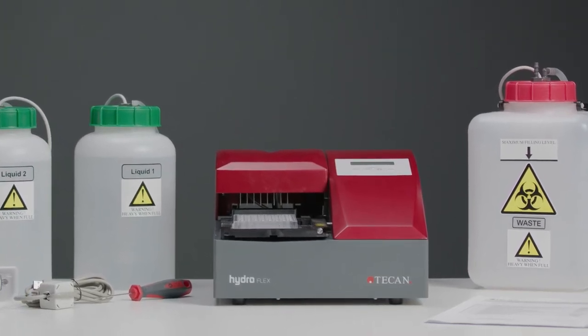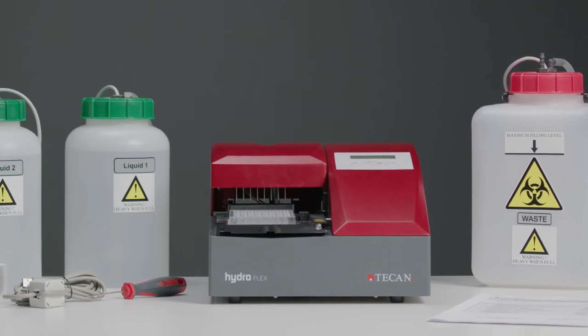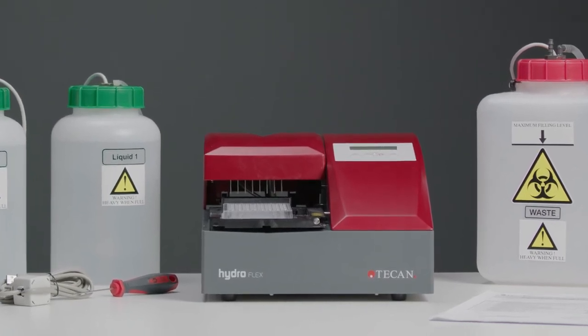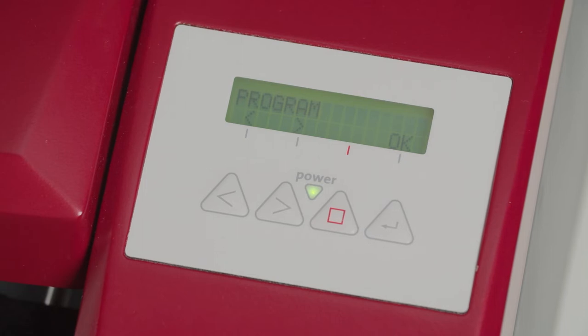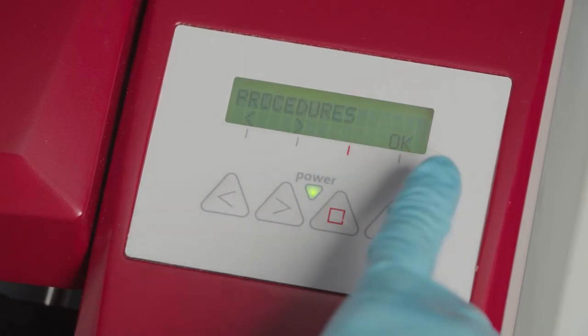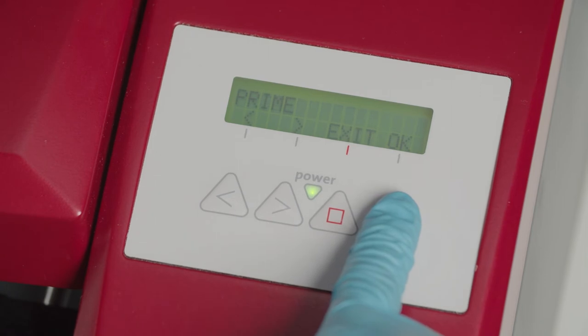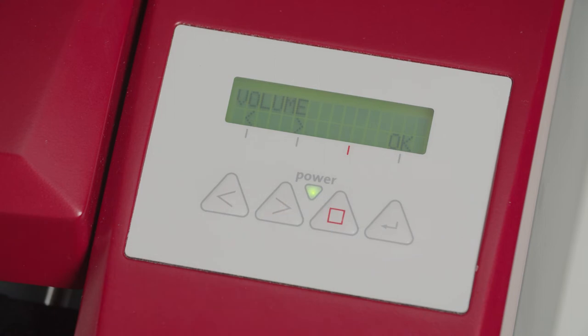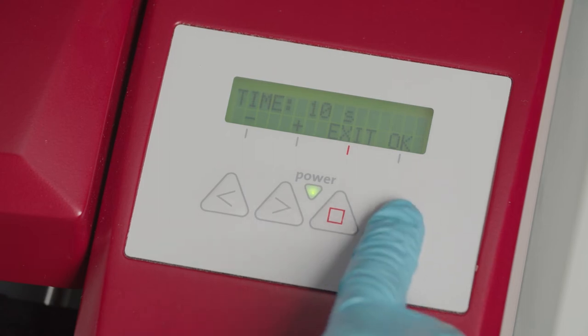This is performed automatically as soon as two different buffers are used within a wash program. Use the arrows and plus and minus to navigate through the program and OK for confirmation. Select and confirm the prime procedure. Define a volume or duration time and select the required channel.